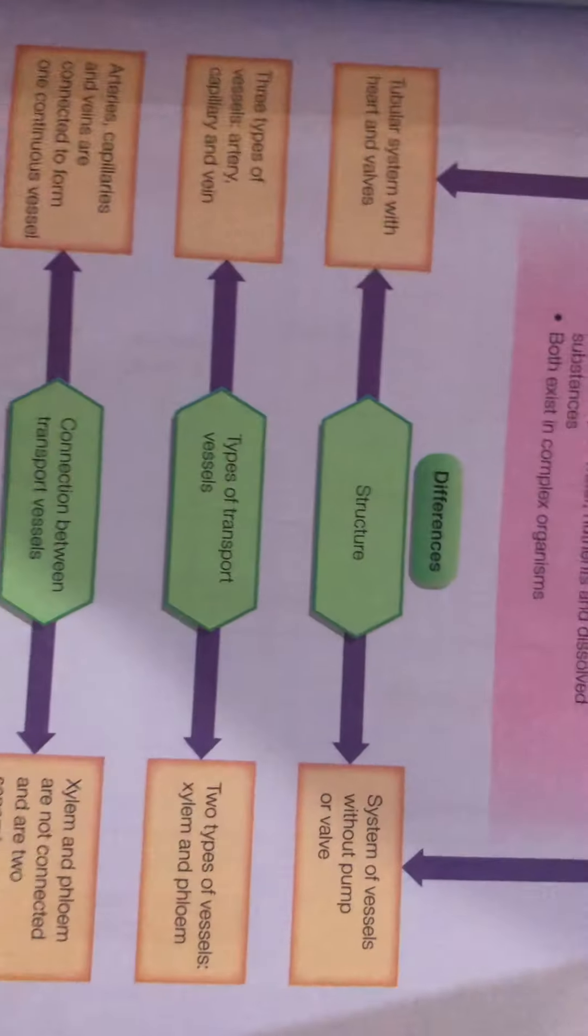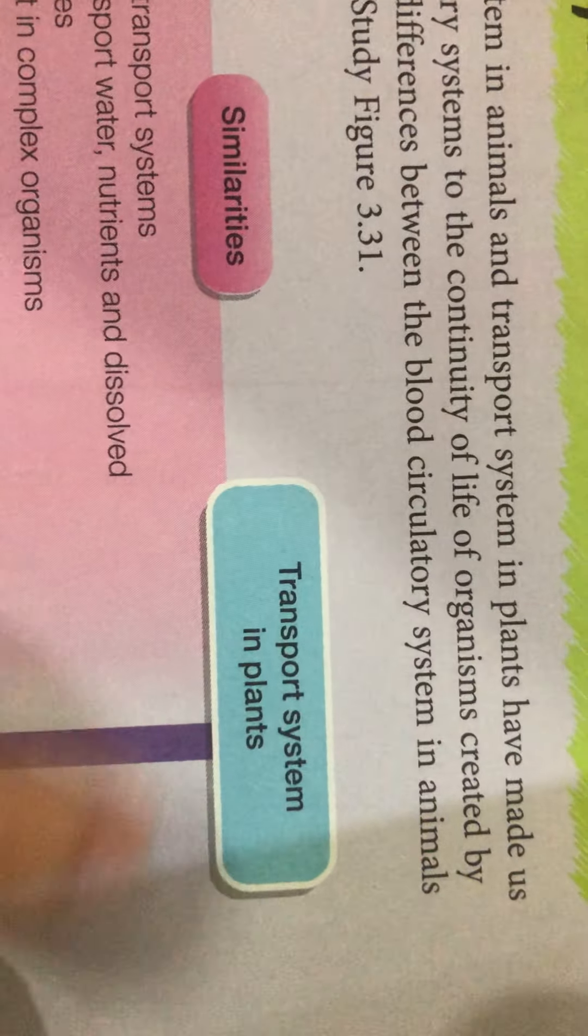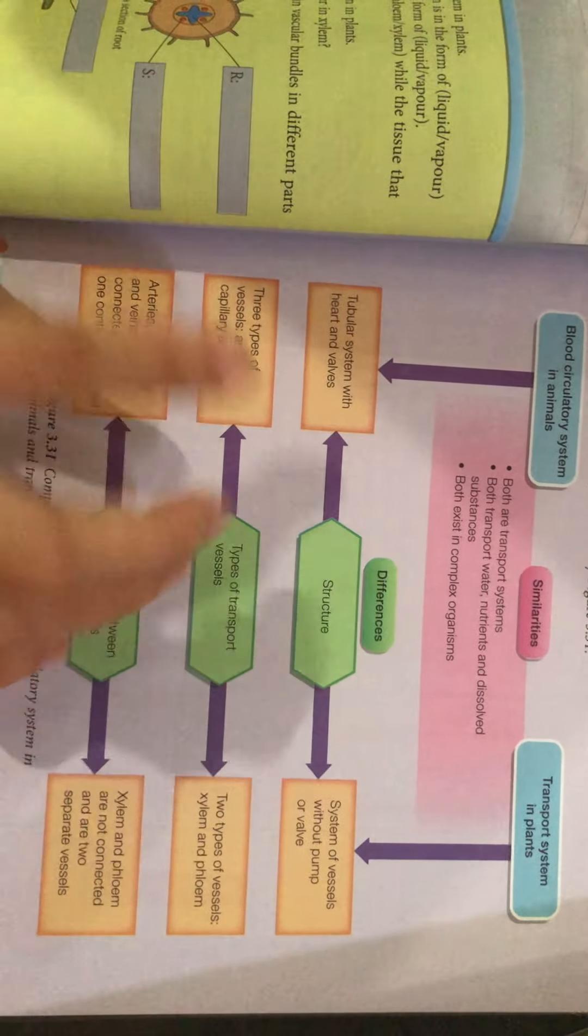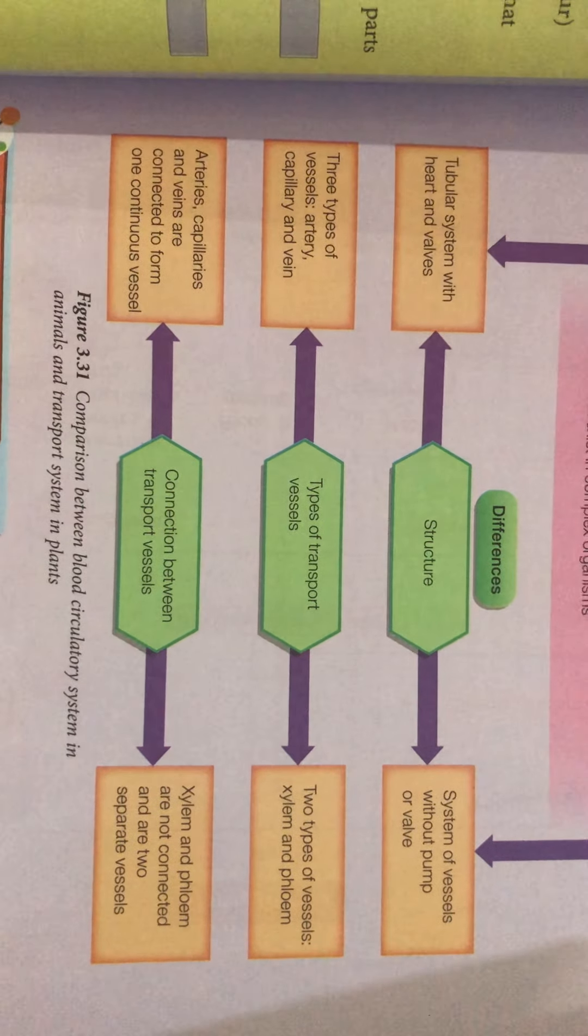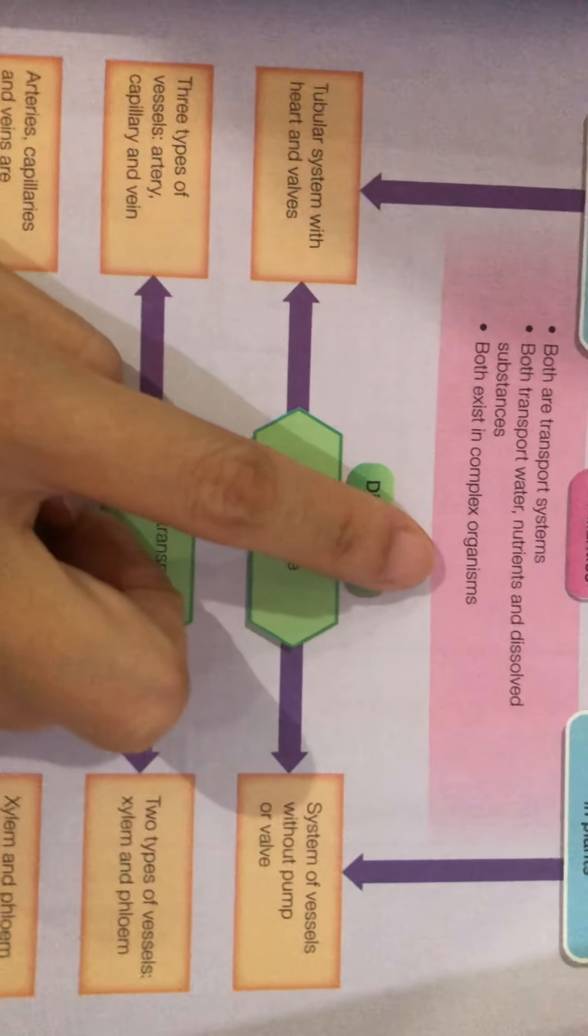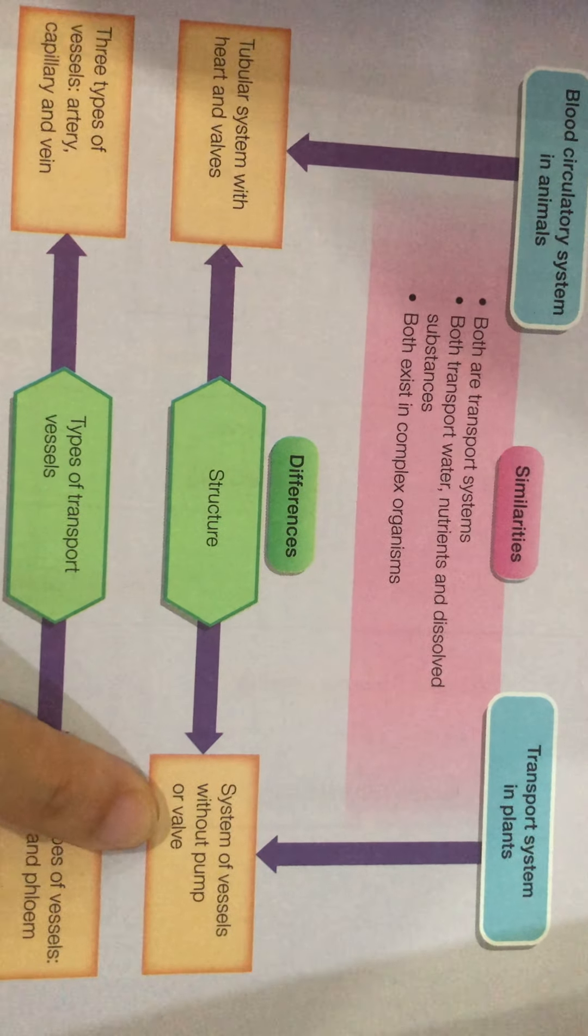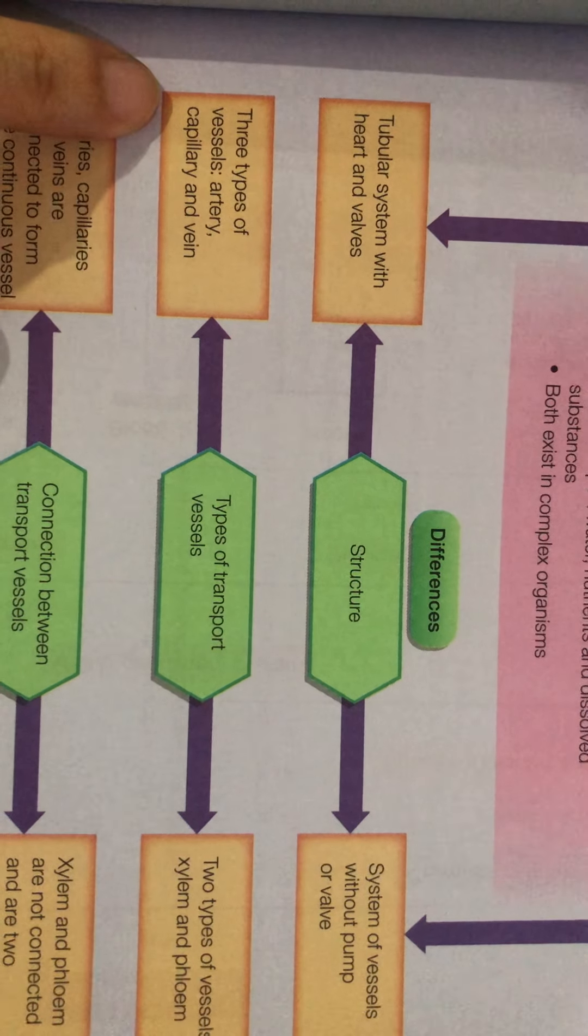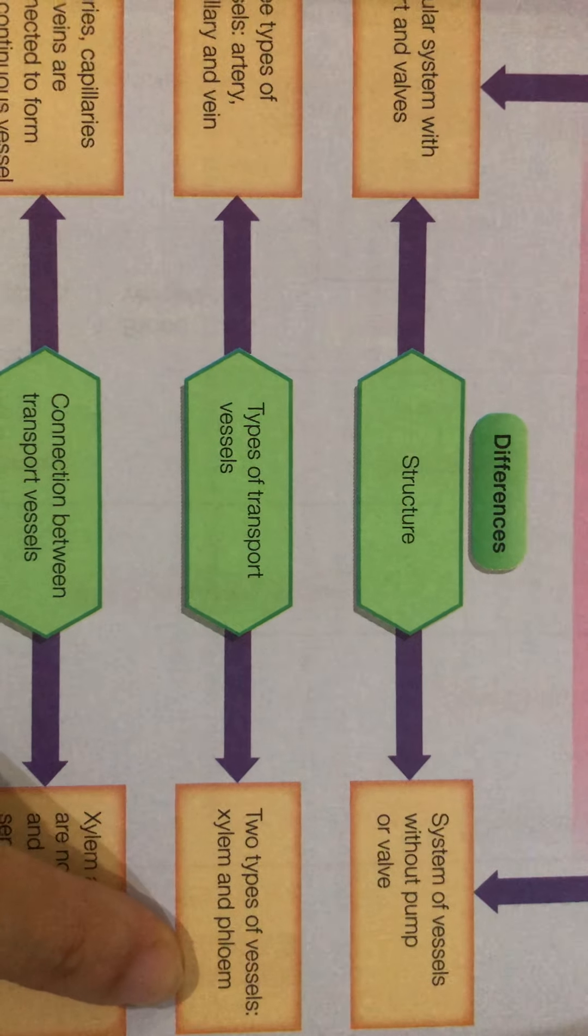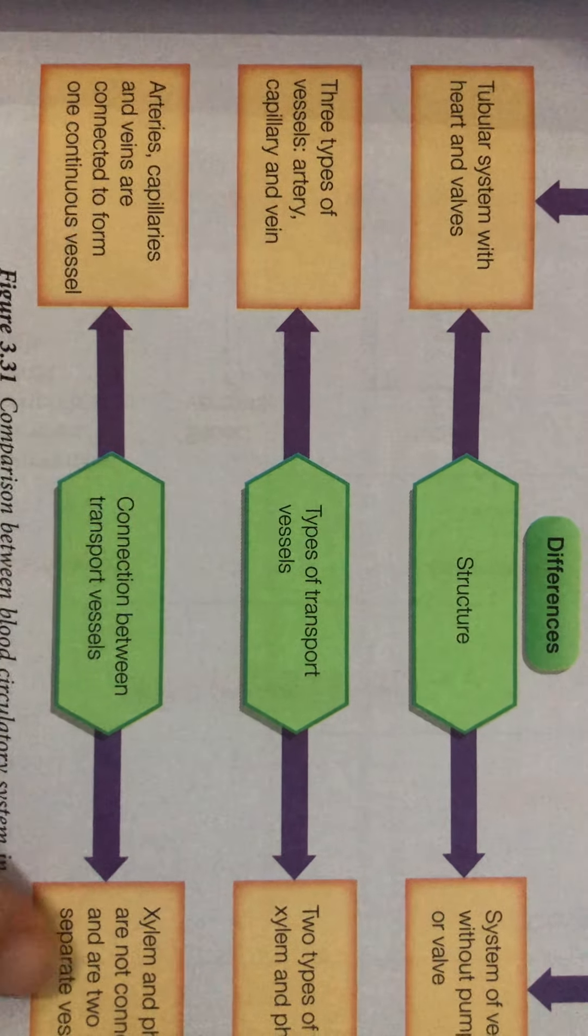Now, last part in your textbook, it is the comparison. You have to compare blood circulatory system in mammal or in animal and also transport system in plant. So now look at the similarity is actually both actually is transport system. Both transport nutrients, water, and dissolved substances, and both is actually needed for complex organism. So what is the differences? This one, animal, we need pump, we need heart and valve. This one, plant, no pump, no heart, no valve. And then for animal, we have artery, we have vein, we have capillary, but for plant, we have only two, that is xylem and phloem. And then this is actually connected, as I mentioned just now, connected, and this is not connected. That is the differentiation between plant and animal.